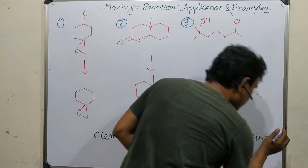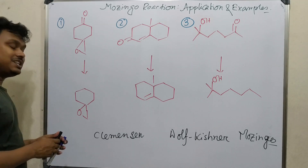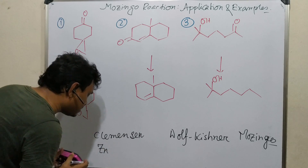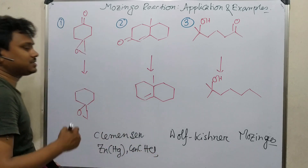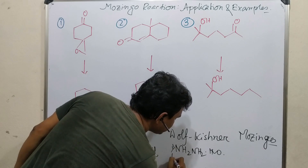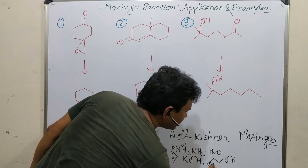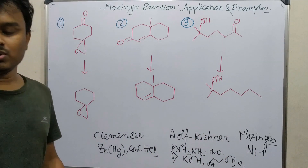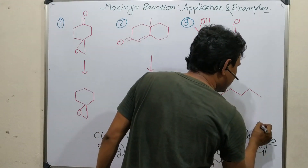Let me write the conditions. Clemensan: zinc amalgam with concentrated HCl. Wolf-Krishna: hydrazine hydrate, then step two is KOH or base, with glycol and heat. And Mozingo: Raney Nickel — nickel hydride, with hydrazine. This is the main difference among these three reactions. Based on this knowledge we will utilize further to solve the problems.